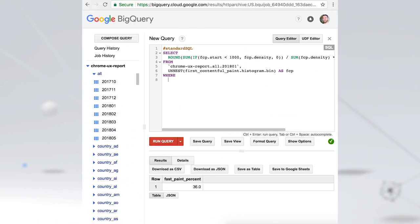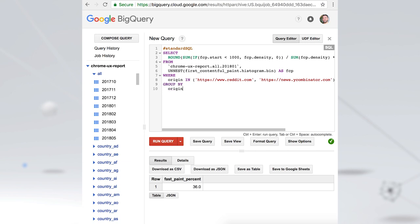We can start with the previous query and simply group by the competing origins. By adding the average and slow densities, we get a more complete picture of the distribution and see that Reddit actually skews slightly slower.